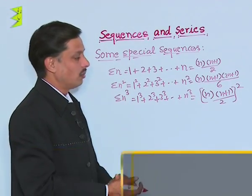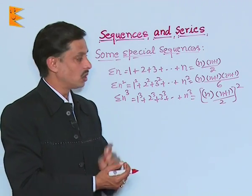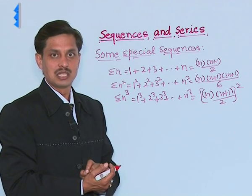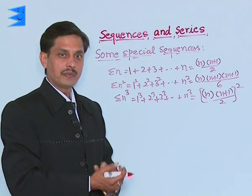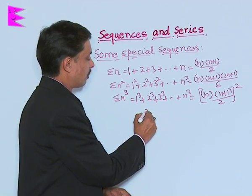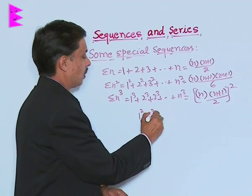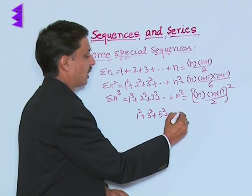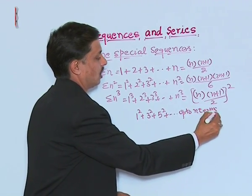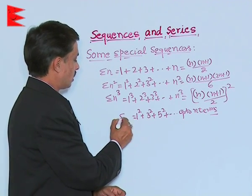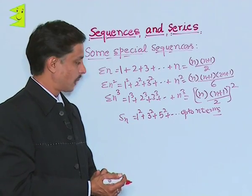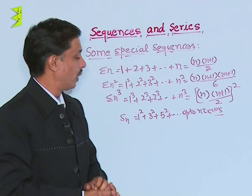We will solve the problems based on these results which come in the category of some special sequences. I am taking an example. Suppose the question is, find the sum of 1 square plus 3 square plus 5 square plus dot dot dot up to n terms. If the sum of all these n terms is required, then we can think in two ways.